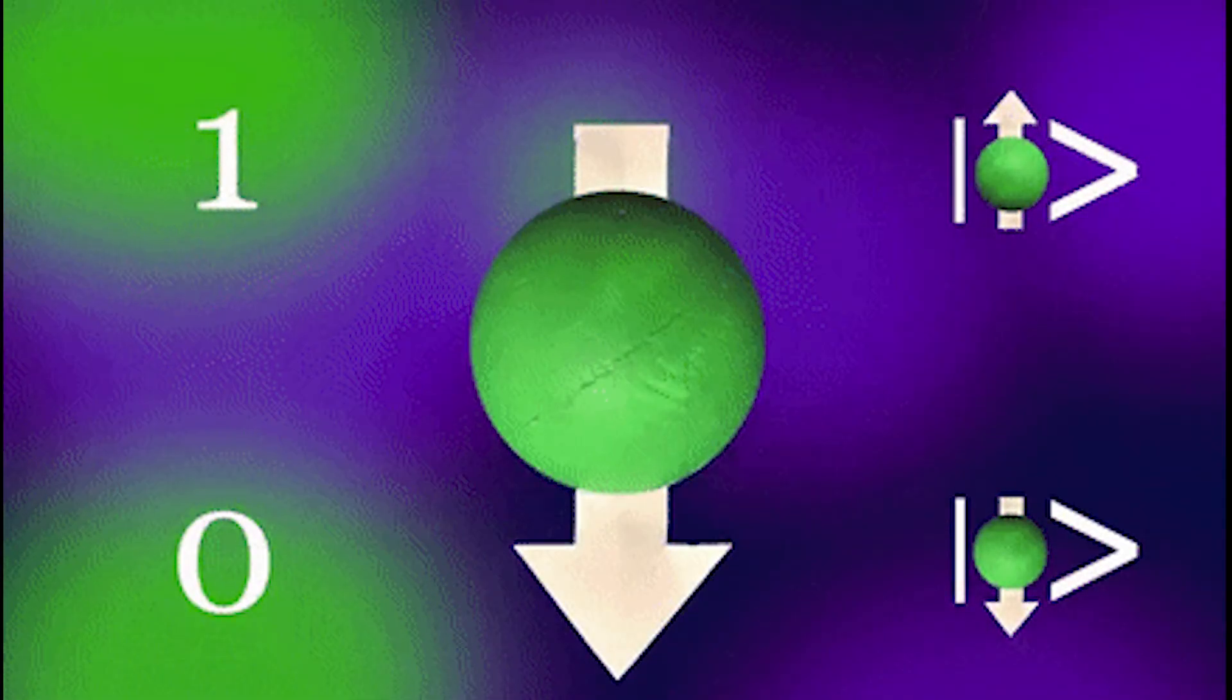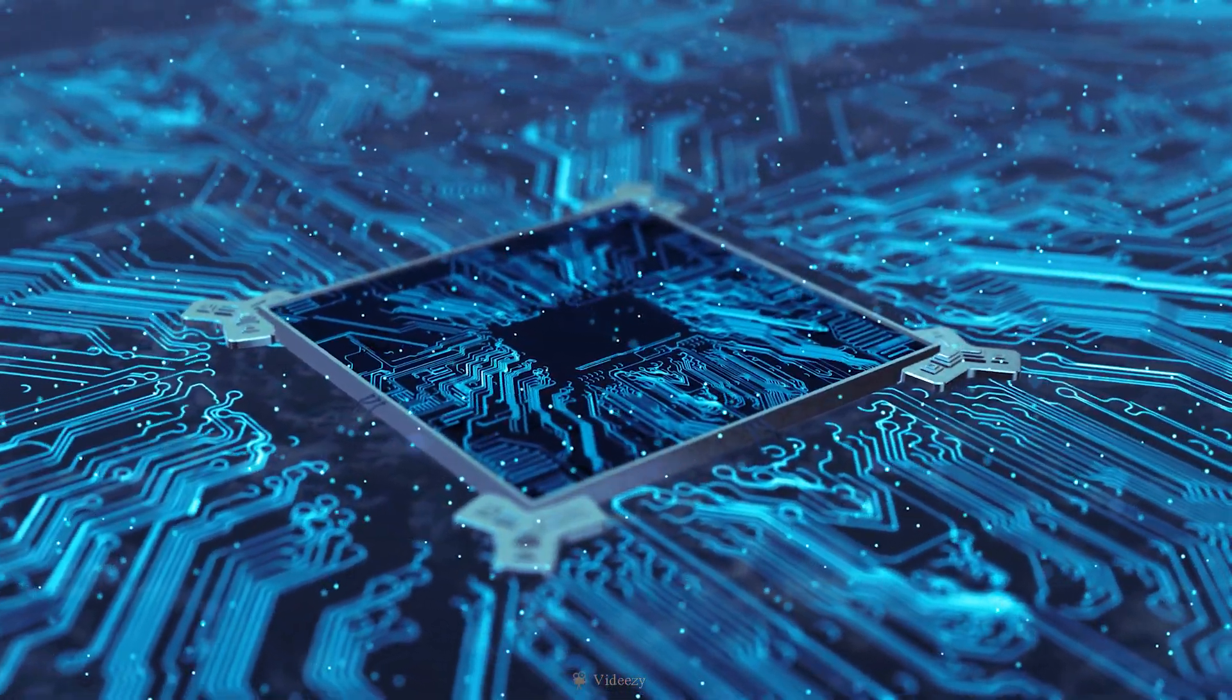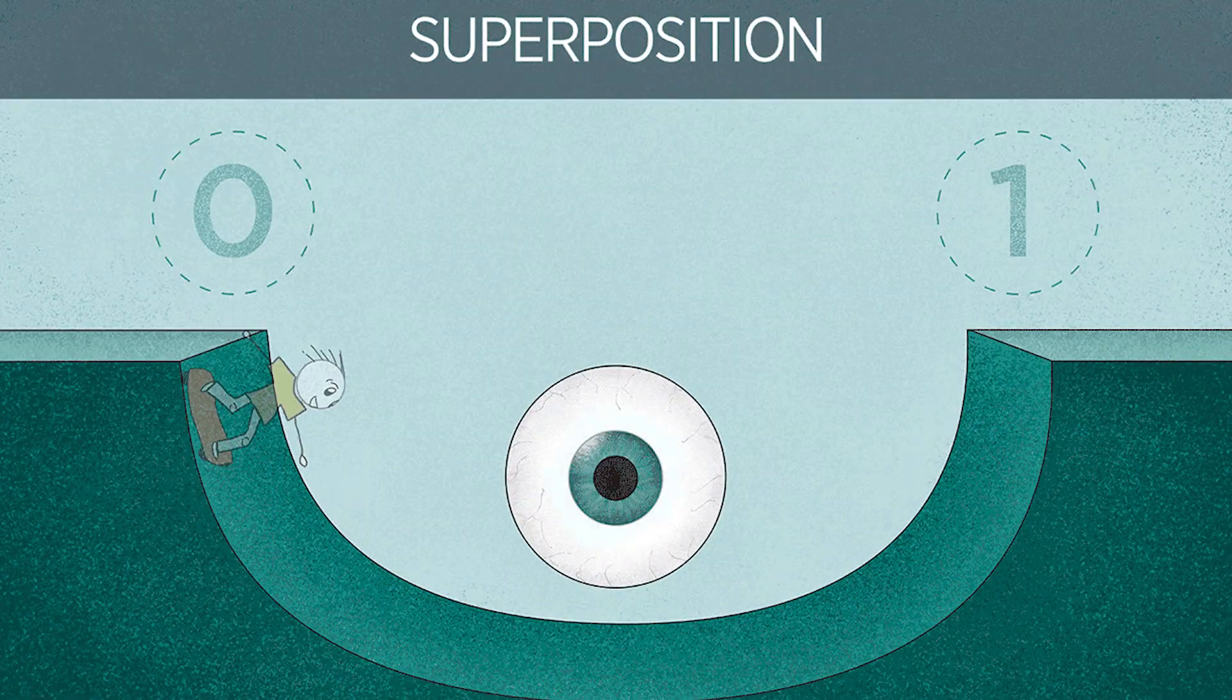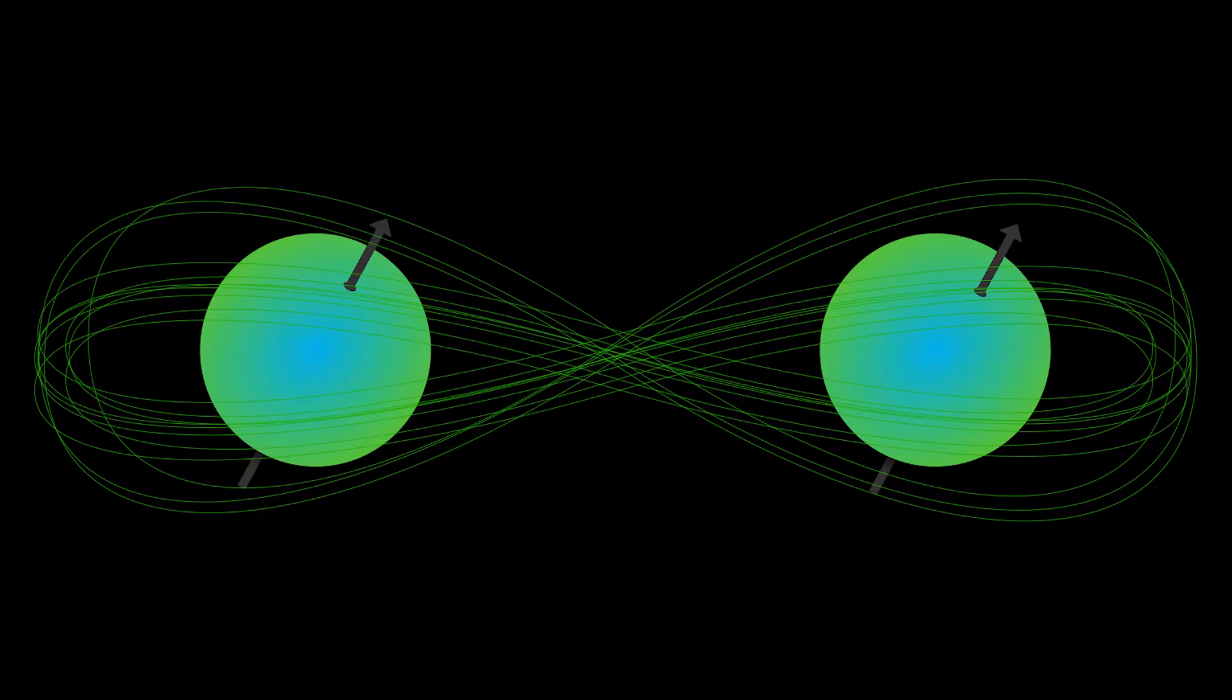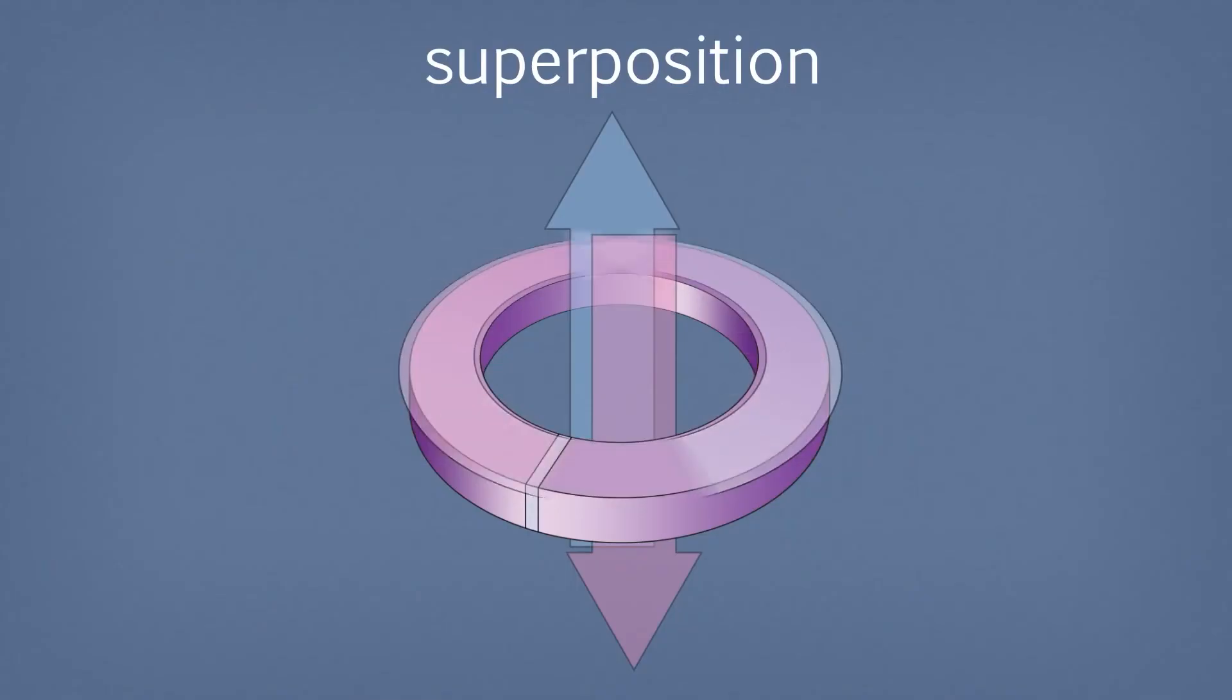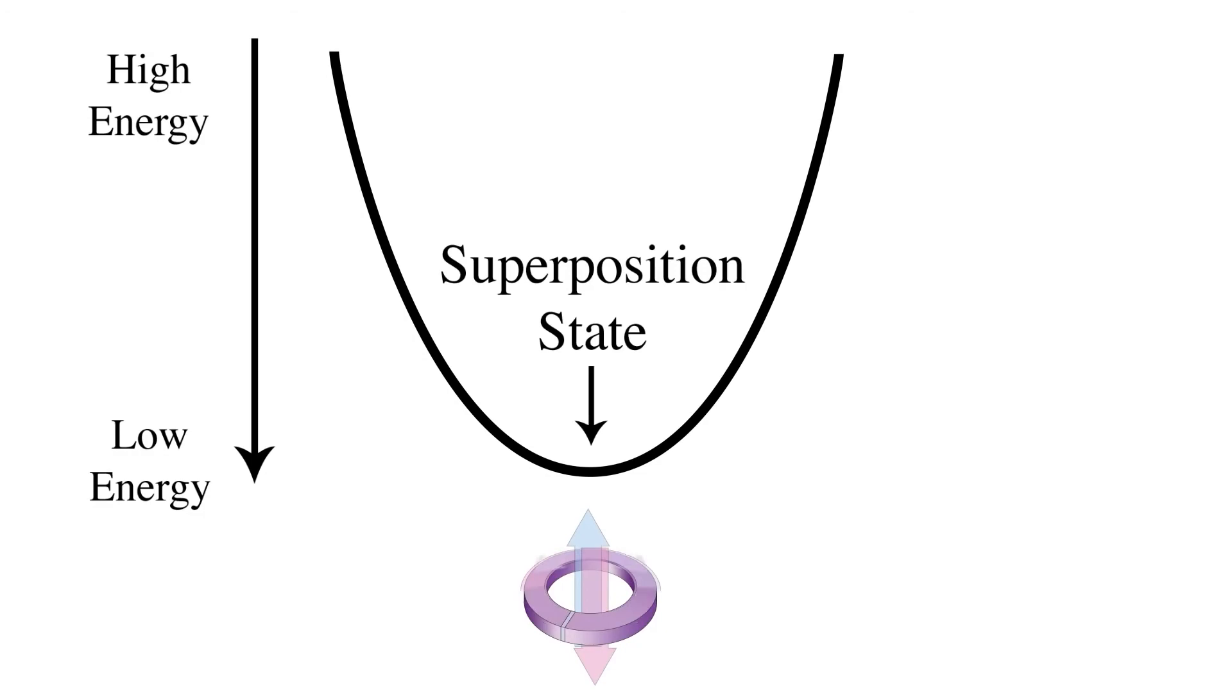Qubits have some quirky quantum properties. This means that a connected group of them can provide way more processing power than the same number of binary bits. One of those properties is known as superposition, and another is called entanglement. Qubits can represent numerous possible combinations of 1 and 0 at the same time. That is, the ability of a quantum system to be in multiple states simultaneously. And this is superposition.